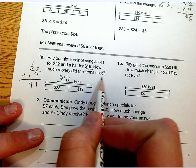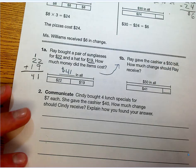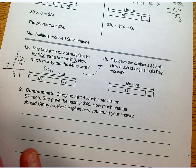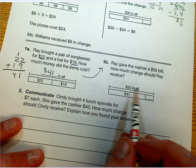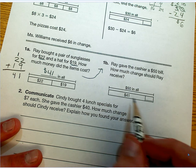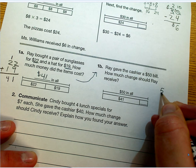But we're not done. You've got to look over to B here, and we're going to use that answer to answer 1B. Ray gave the cashier a fifty dollar bill. How much change should Ray receive? So very similar to the top problem we did. If he gave fifty dollars to the cashier, and he spent forty-one dollars, we're going to have to stack and subtract there.